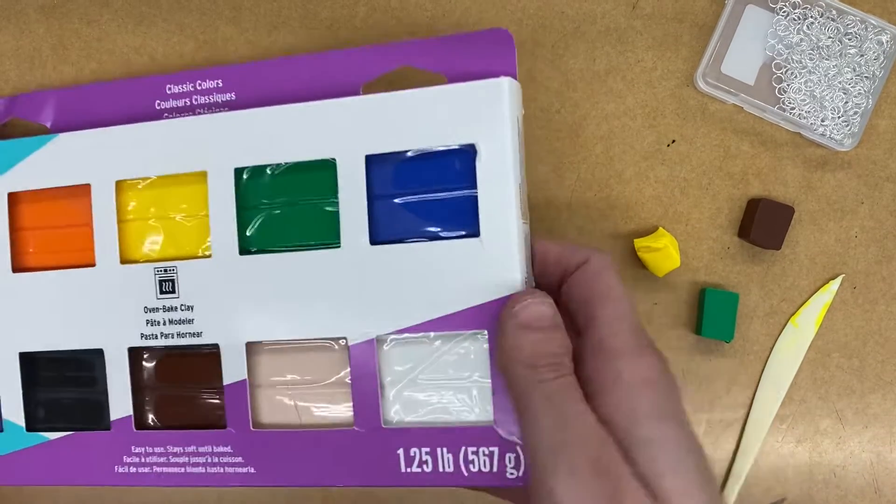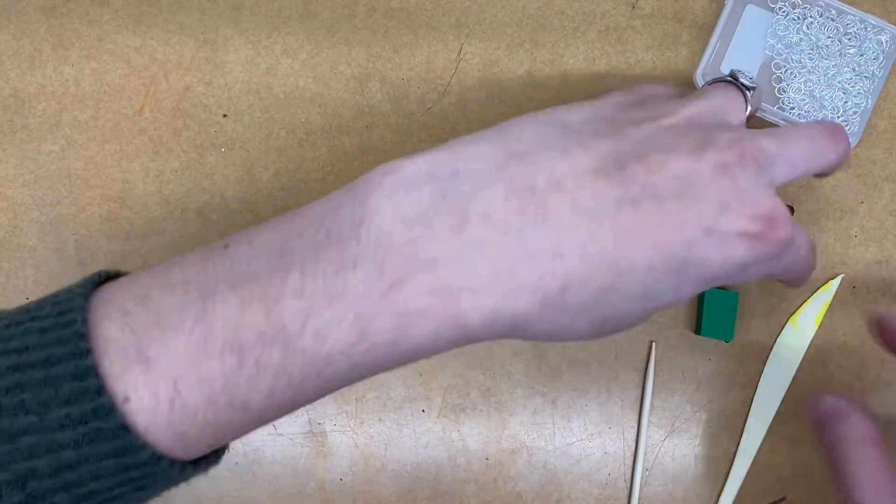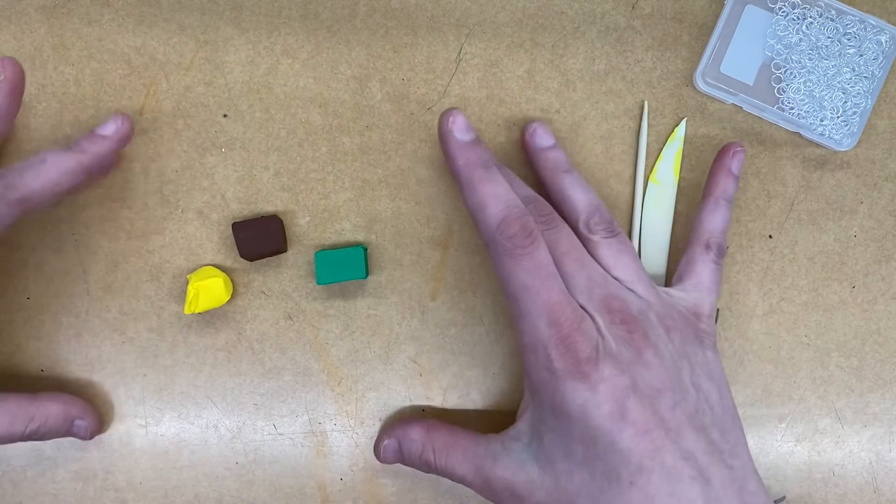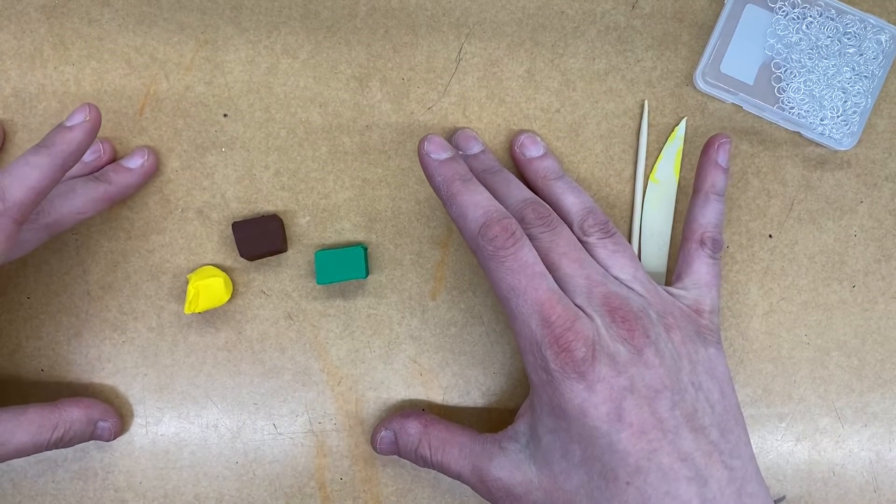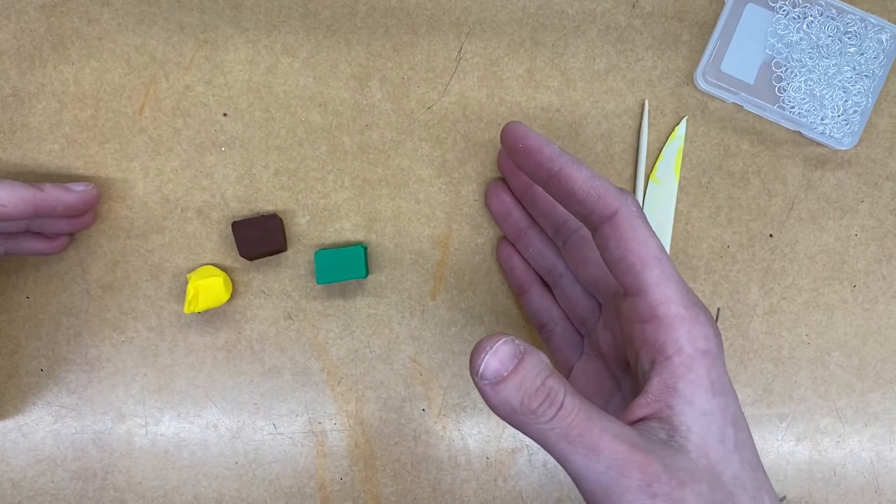This is generally used to make smaller items, which is why this works really well for the keychains. I have already gone ahead and divided up the clay into small cubes, so that way you can pick the colors that you need. And you need a lot less than you actually think you do.